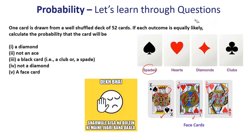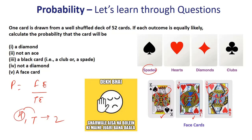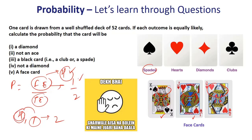One absolute basic of probability is that probability equals favorable events upon total events. If you toss a coin, you can either get a head or a tail, so total number of events is two. If you want a head, your favorable event is getting a head. So if you toss a coin, the probability is one upon two. That's the absolute basic required for probability, and you can solve all other questions if PNC basics are there.